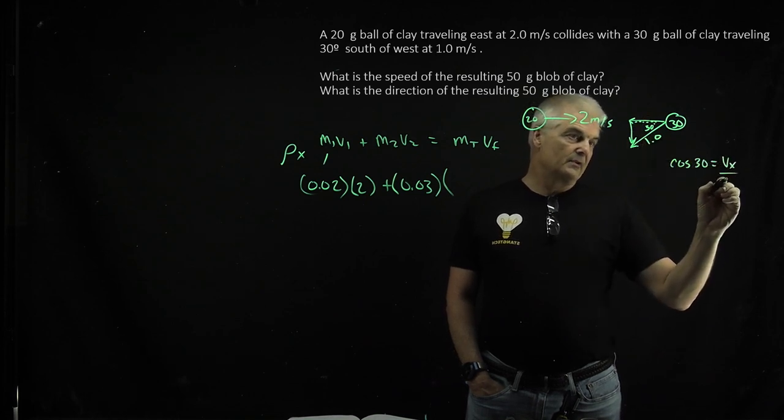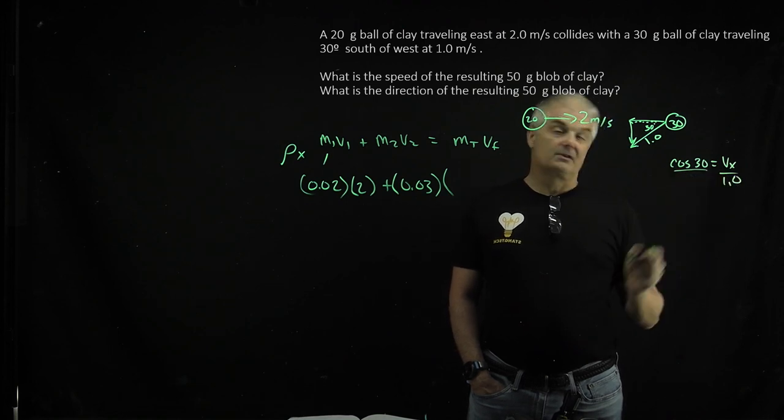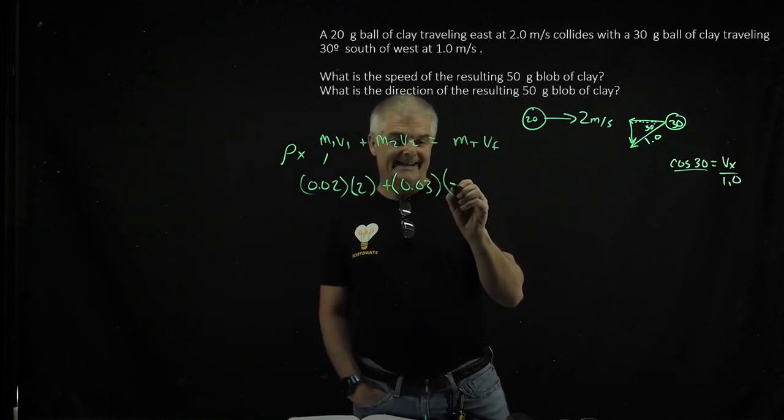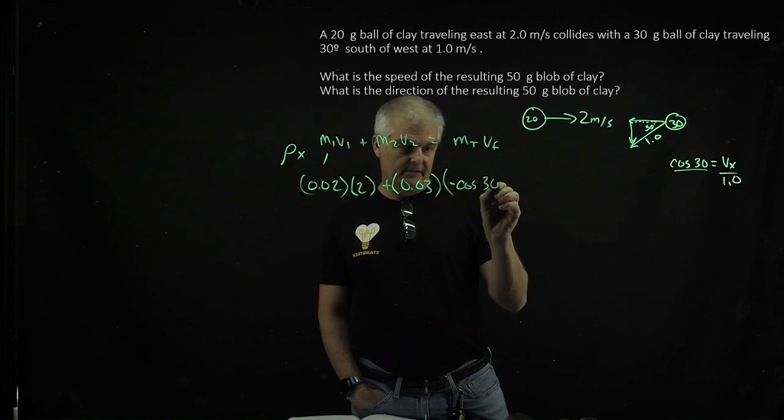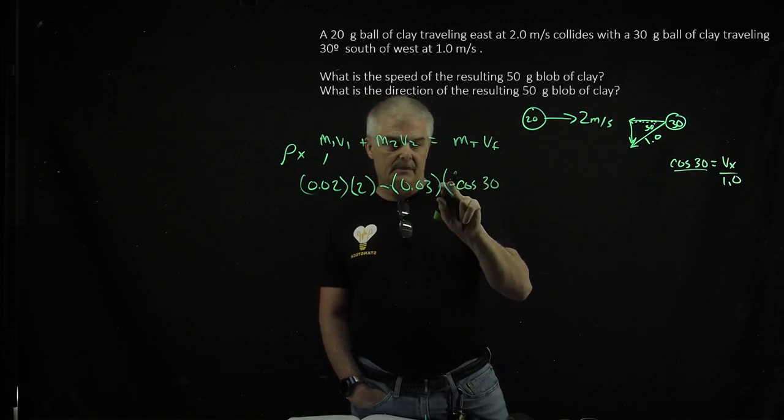So Vₓ is just cos 30°. This would be negative cosine of 30, or minus cos 30.